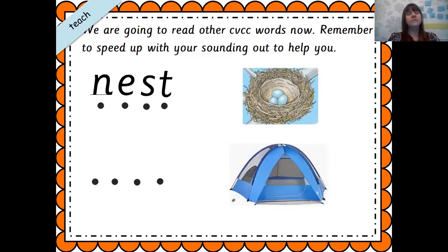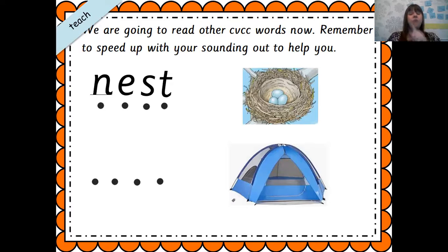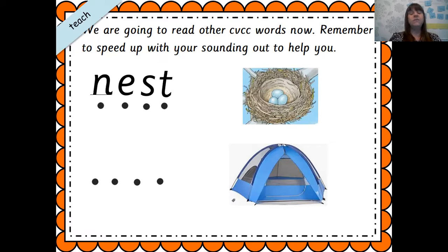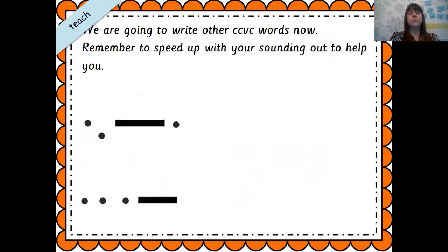Our next word is going to be tent. Sound out tent with your adult. Well done — did you get it right? Write the letters that make the sounds in this word. Let's do it together: T-E-N-T. Tent. Let's see if you've written the correct letters: T-E-N-T. Did you write that? If you didn't, just check it and correct it — that's fine, we're still learning.